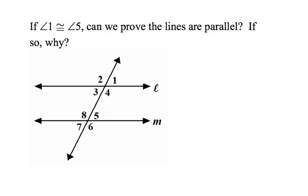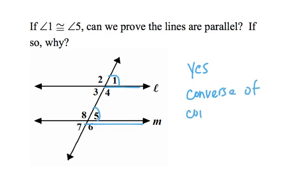Angles 1 and 5 — do they prove lines L and M are parallel, and why? Well, 1 and 5 are corresponding. They are congruent, and both of them touch the lines I am proving are parallel. Yes, and the reason why is the converse of corresponding angles.